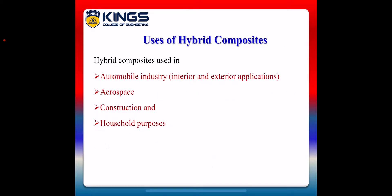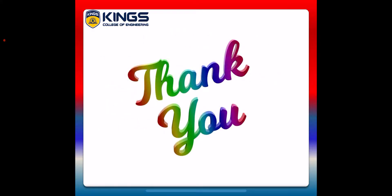Next, we see about uses of hybrid composites. Hybrid composites are used in the automobile industry for interior and exterior applications, in the aerospace department, in the construction department, and for preparing household purpose items. Thank you.